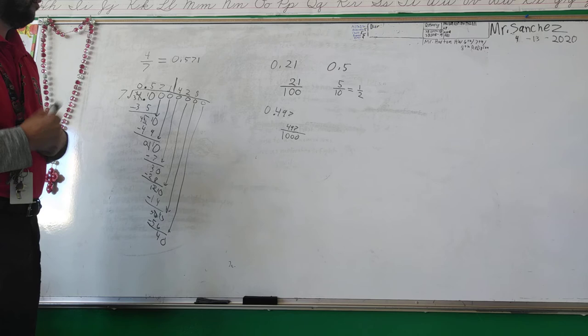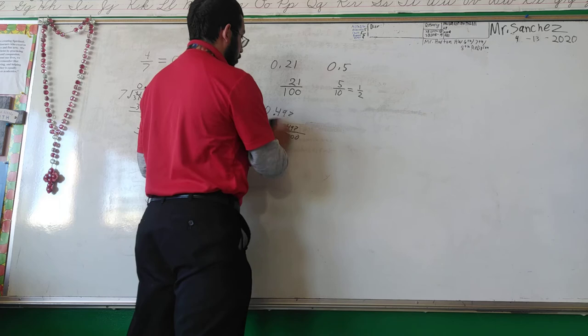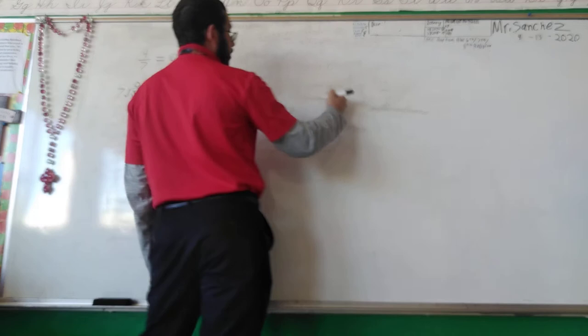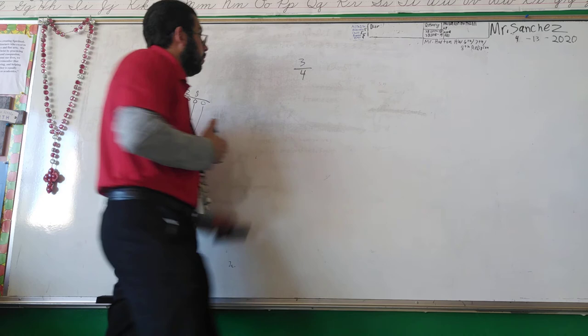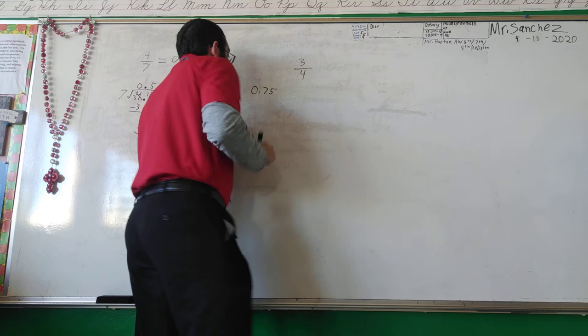But, wait. Mr. Sanchez. Would any of these decimal places? So, here. Let me erase that. You may be asking. But, wait. Mr. Sanchez. Is there a time where a decimal can be 3 over 4? It's like, yeah. Actually, it could. It's possible. But, you have to start with this number first. So, we have 0.75.